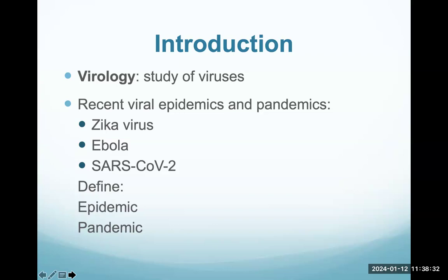I'd like to define epidemic and pandemic, because these are words commonly used in the press and perhaps you need some clarification. An epidemic is when a particular disease has cases beyond what we would normally expect for a given region or country. A pandemic is where an epidemic has spread to multiple countries or continents. We think of an epidemic as being somewhat contained to a region or country, while pandemic generally means it has spread worldwide.